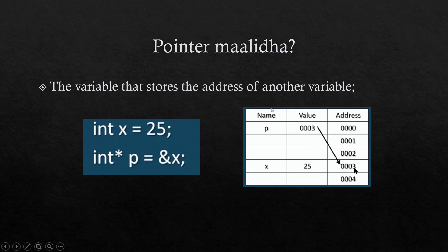So if you want to use the operating system, you will need to be able to use the pointer to declare. Because it is clear that if you need to tell two variables, this is the pointer owner of x.